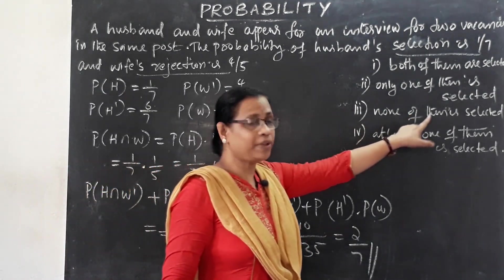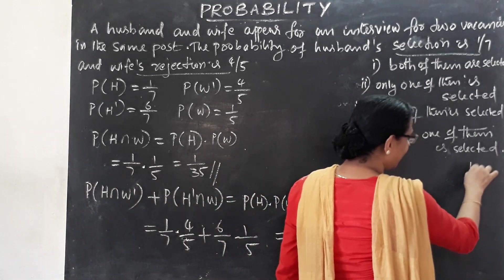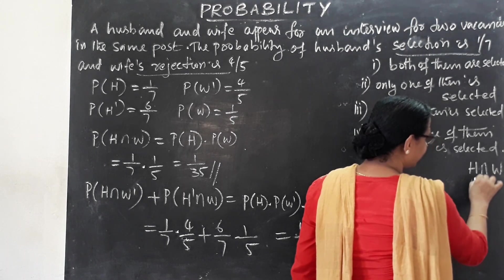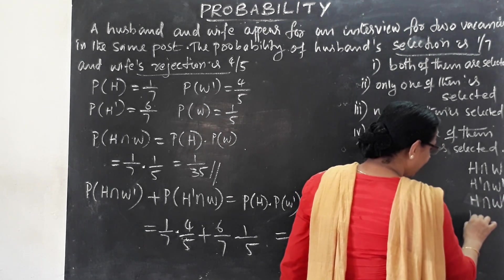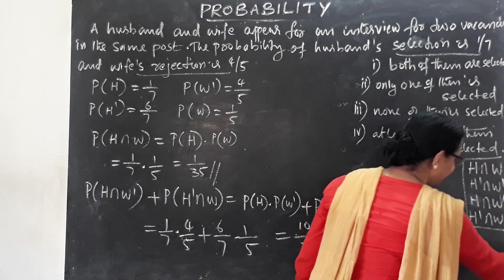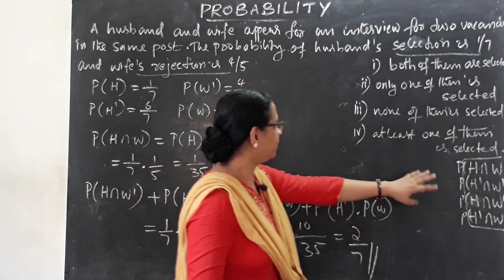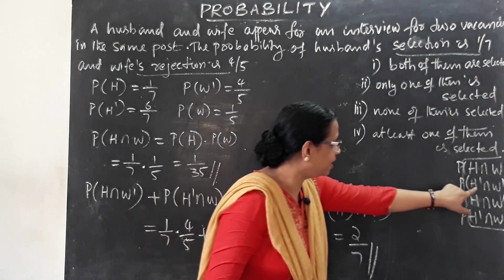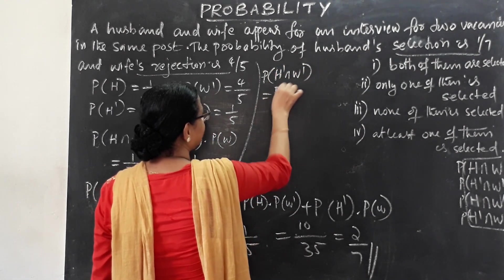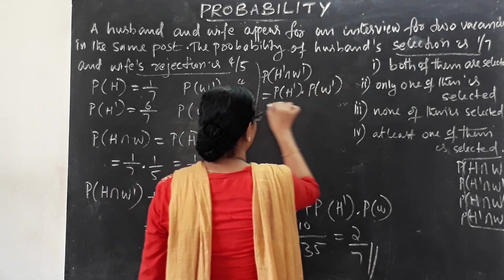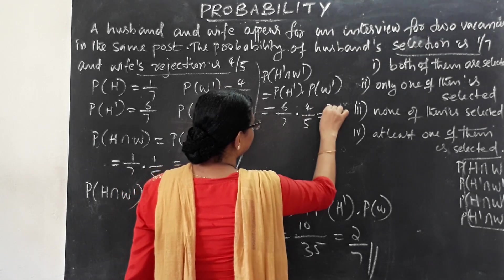For the third question — none of them is selected — we calculate probability of H' intersection W', which equals probability of H' into probability of W'. That is 6/7 into 4/5, which equals 24/35.